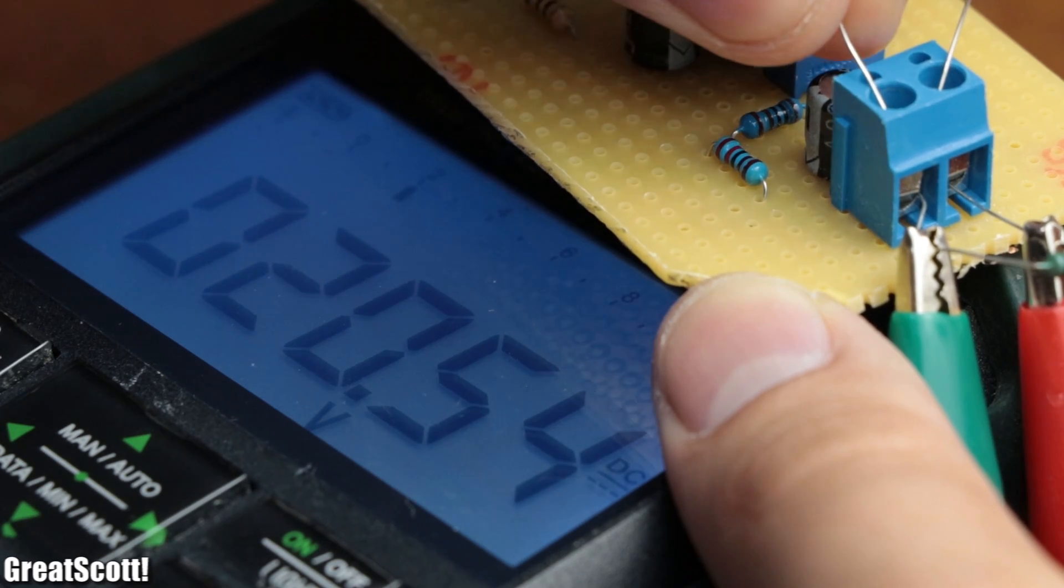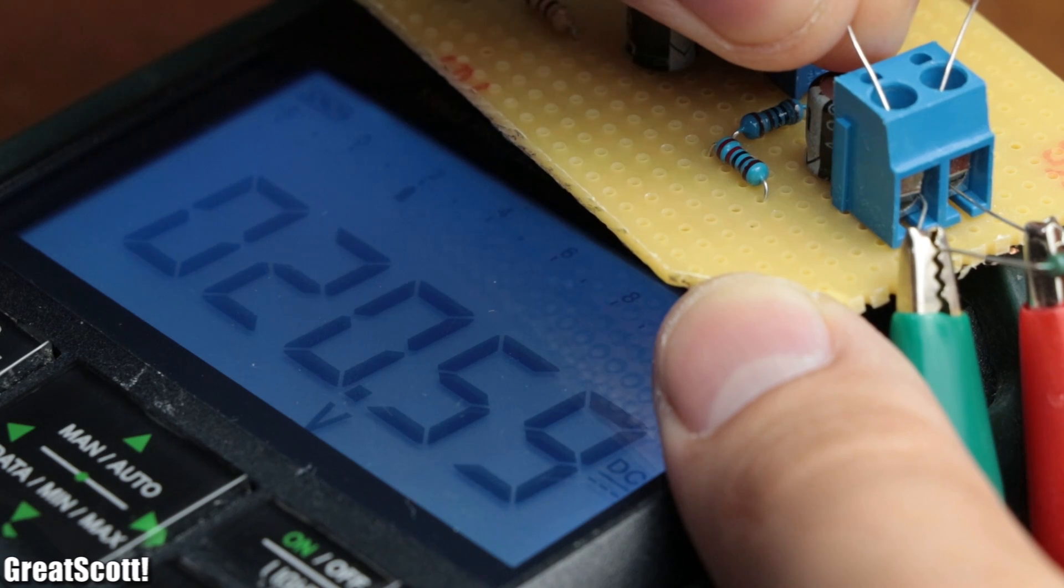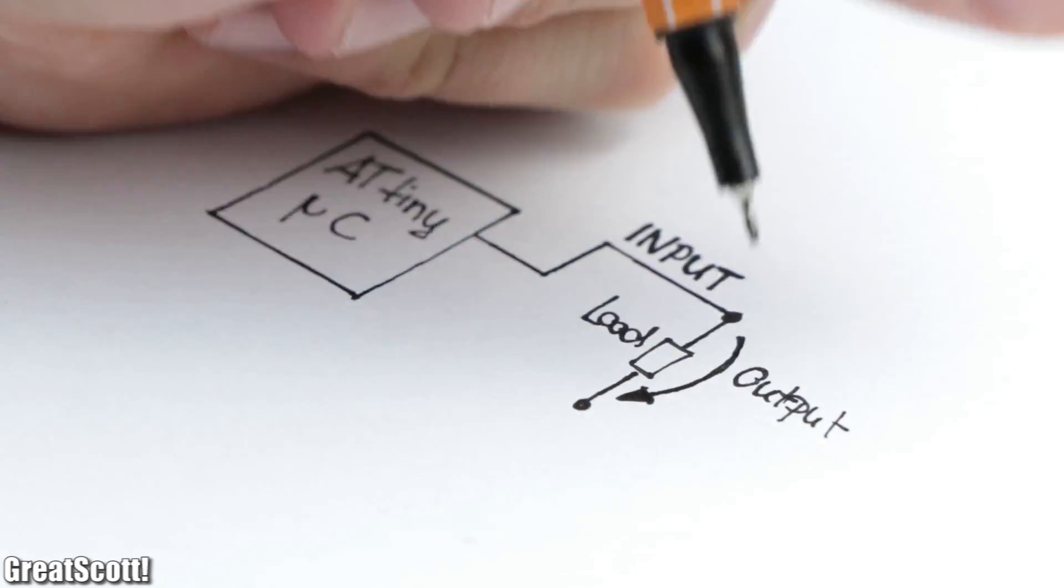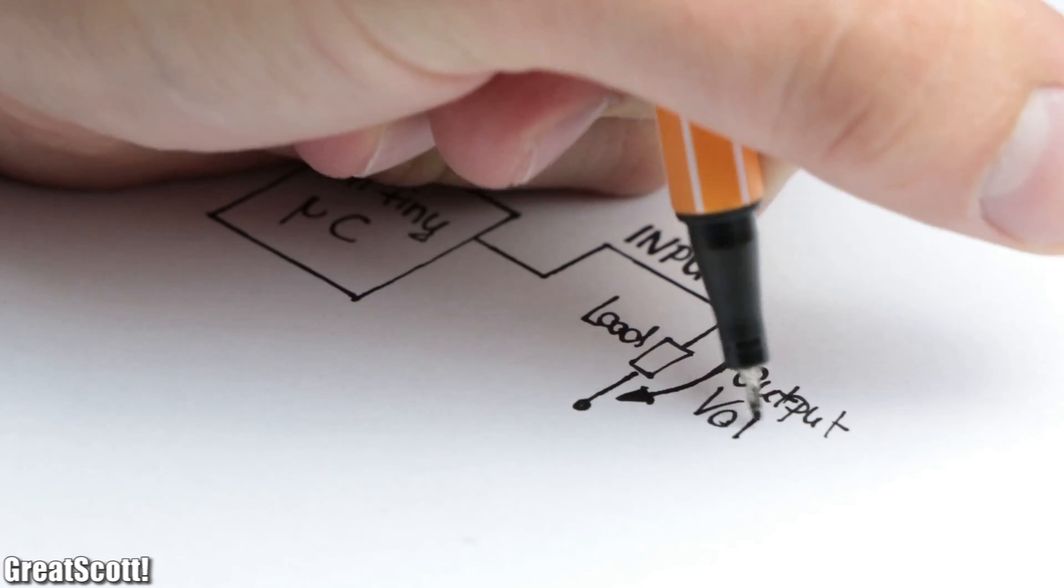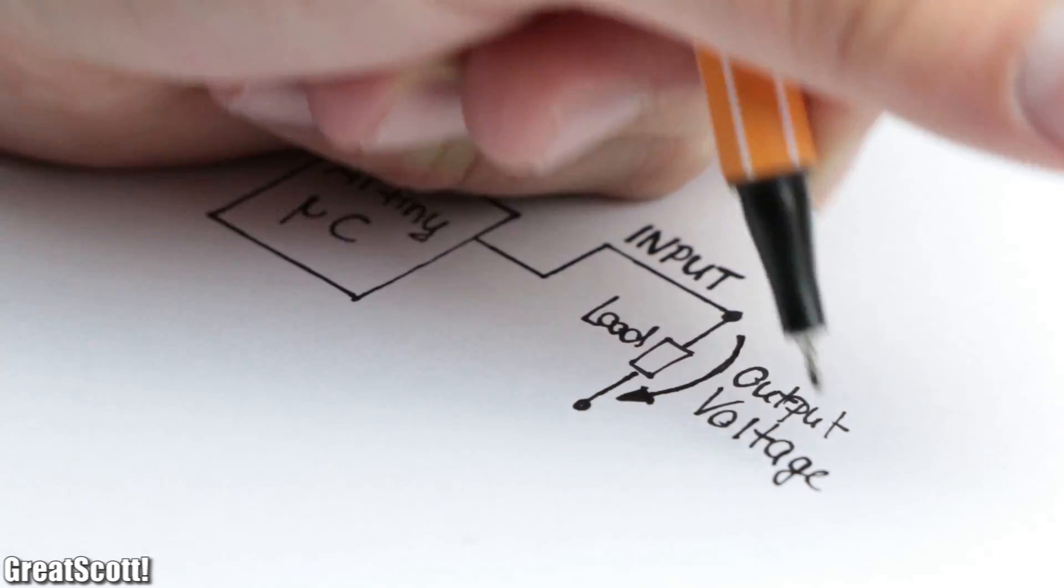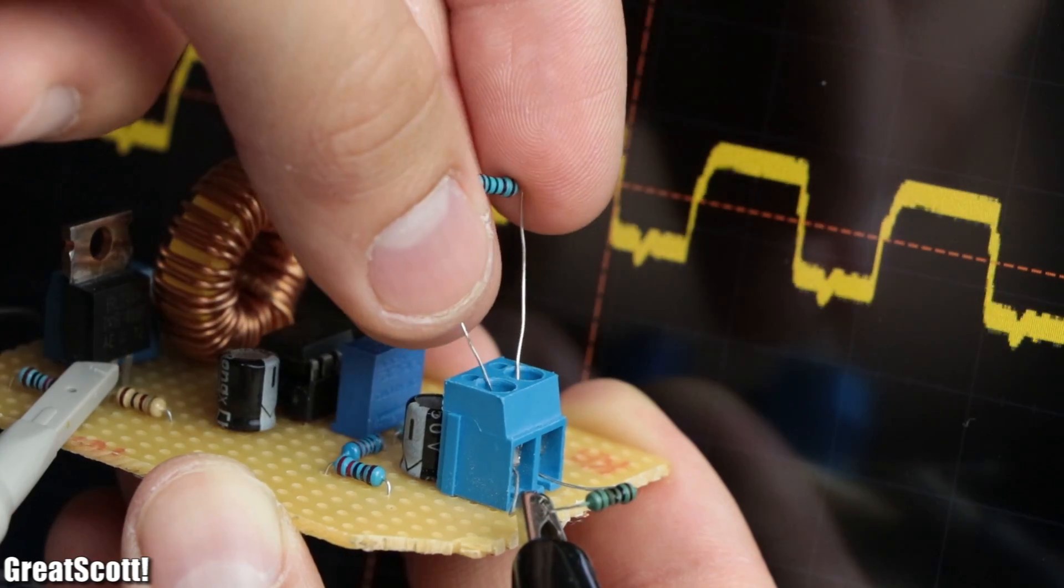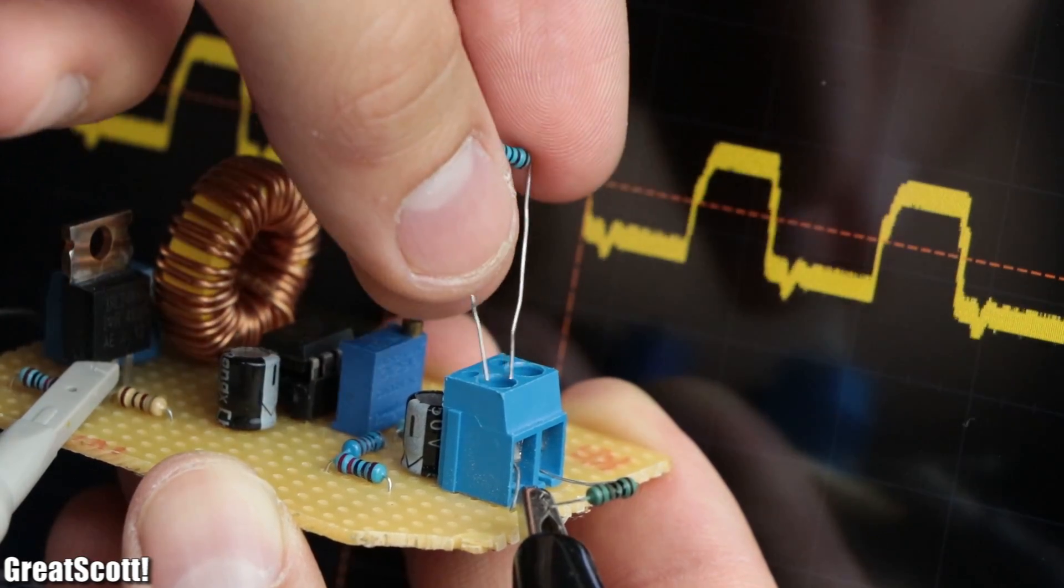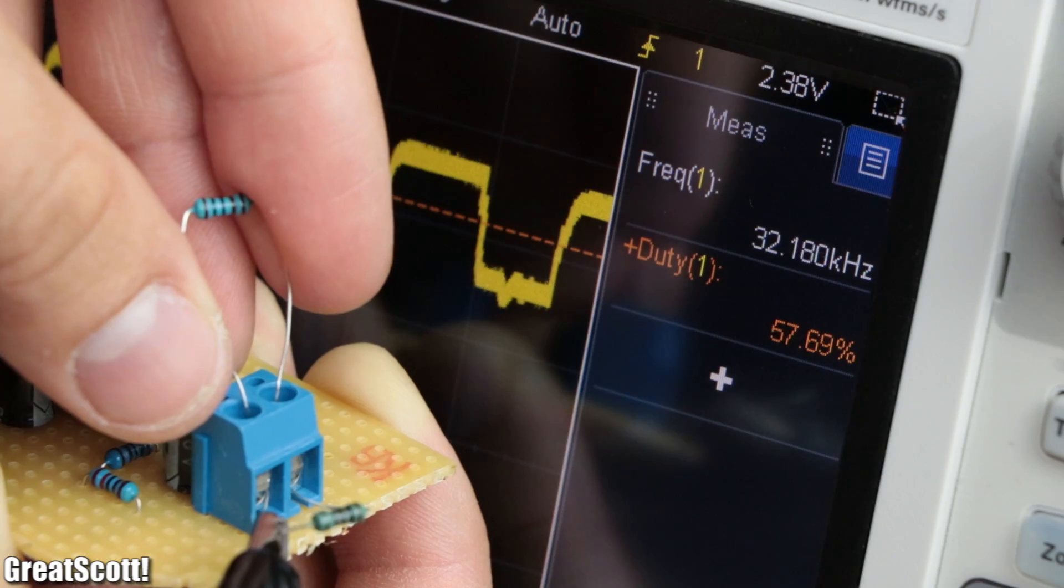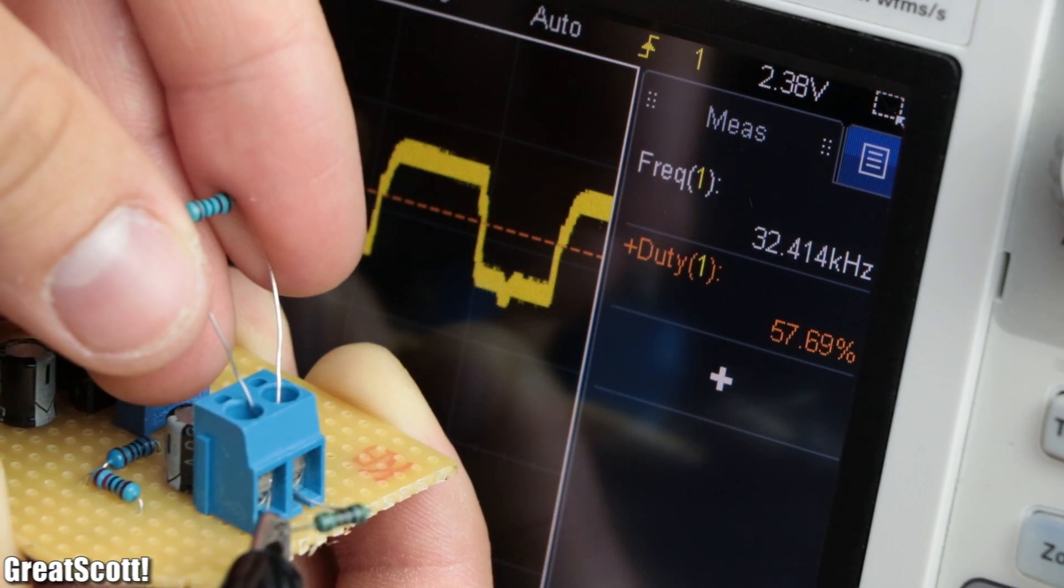It could even keep the output voltage stable when the load changes. This was possible because the ATtiny microcontroller constantly monitored the output voltage and increased the duty cycle when more current on the output was necessary, and decreased the duty cycle when less current was necessary.